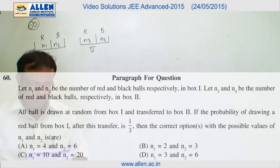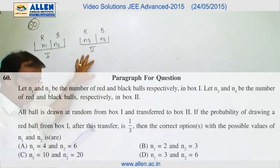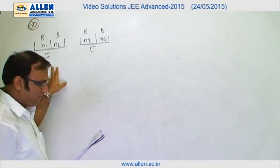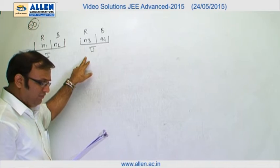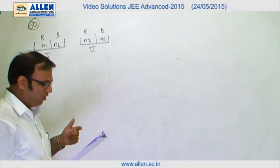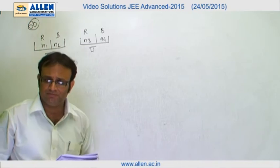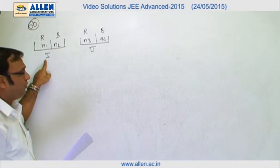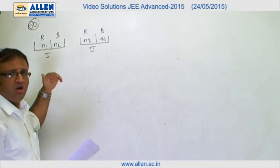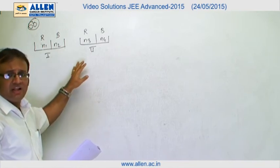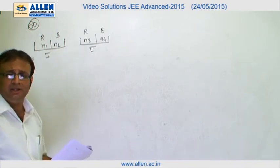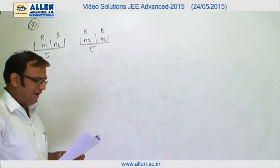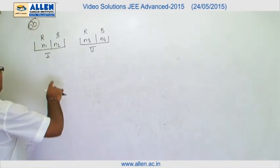In question 60, the same contents and boxes are given. The question says a ball is drawn at random from box 1 and transferred to box 2. If the probability of drawing a red ball from box 1 after this transfer is 1/3, the problem is one of total probability. When we draw a ball from box 1, there are two possibilities: a red ball or a black ball is transferred. After the transfer, we want the probability of getting a red ball from box 1 to be 1/3.